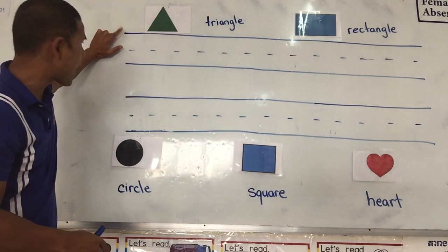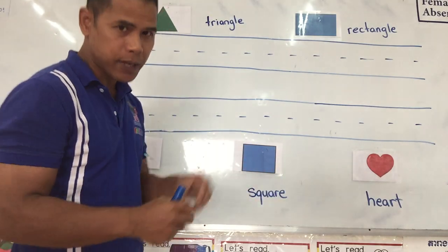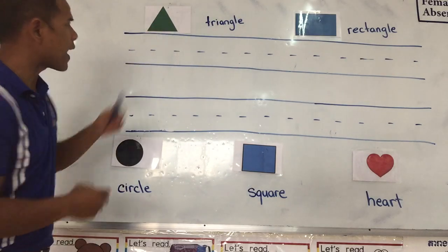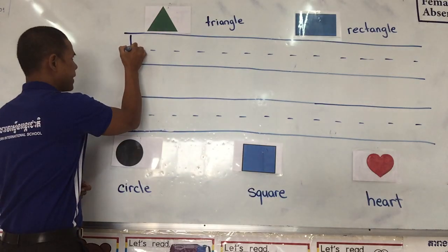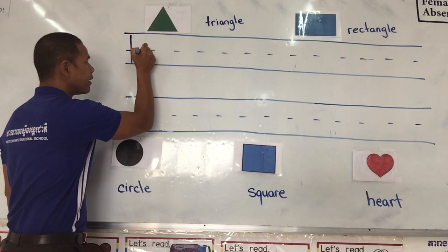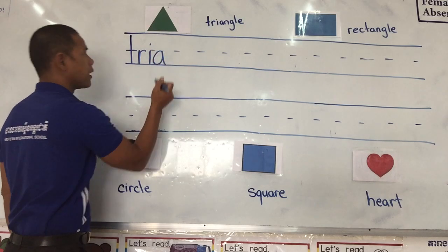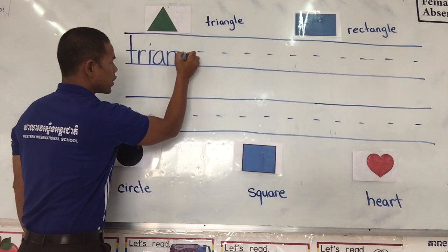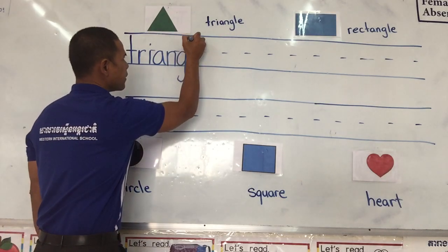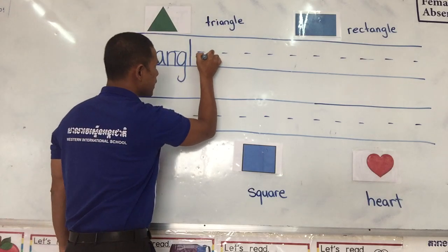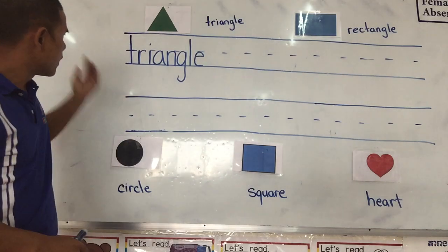Remember we have top line, middle line, bottom line. All of these words are in lowercase. Triangle — letter T: start from the top, straight down to the bottom line and cross at the middle line. R, I, A — start in the middle line, all the way around, up and down. N, G — all the way around, up and down, straight down and hook. L and E. So we have the word triangle: T-R-I-A-N-G-L-E.